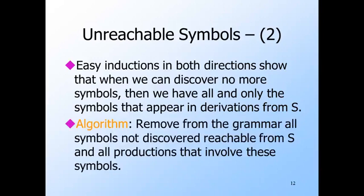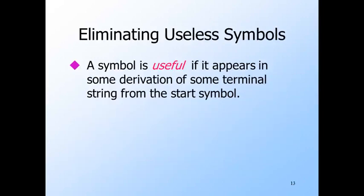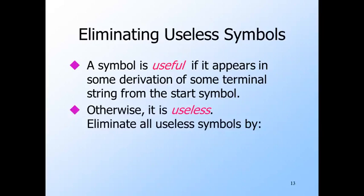We're not going to give the proofs here. Our goal is to get rid of symbols that do not appear in derivations from S. After discovering all the symbols that do appear in a derivation, delete from the grammar all productions that contain a symbol — in either the head or body or both — that does not appear in a derivation. A symbol is useful if it appears in a derivation of a terminal string from the start symbol, and useless otherwise. There are two reasons a symbol could be useless: either it derives no terminal string, or it appears in no derivation from the start symbol, or both.